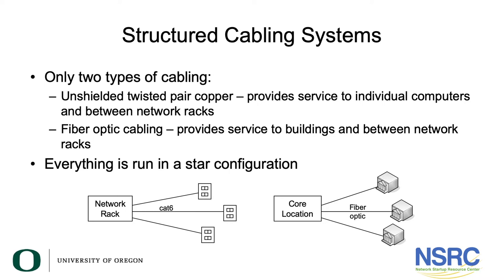Everything is run in a hub-and-spoke or star configuration. You're going to have a network rack that you run Cat5e or Cat6 cable out to individual station outlets that are in people's offices, or to access points, or to classrooms. From your core location, your central location, you're going to run fiber optic cable to each building.